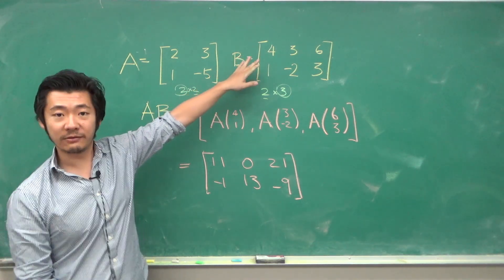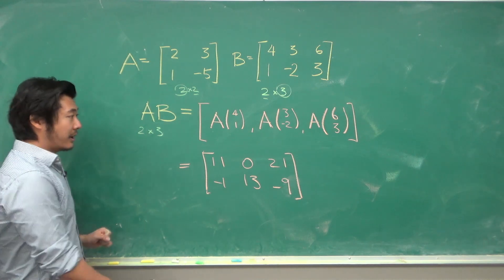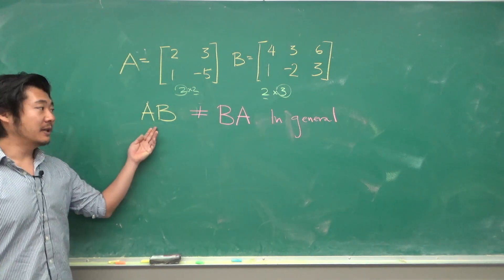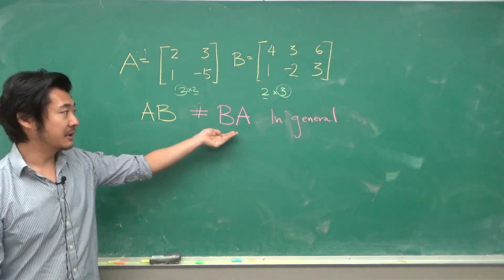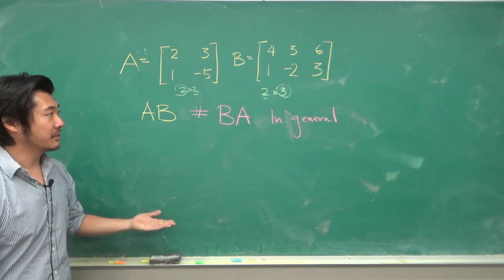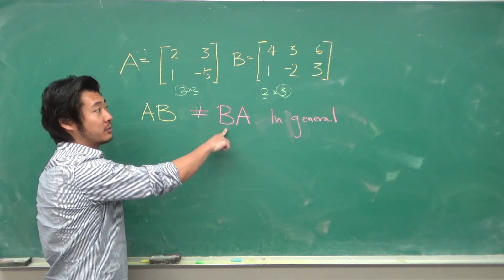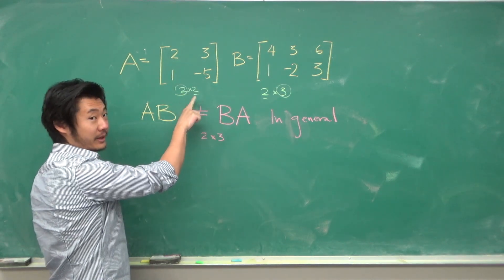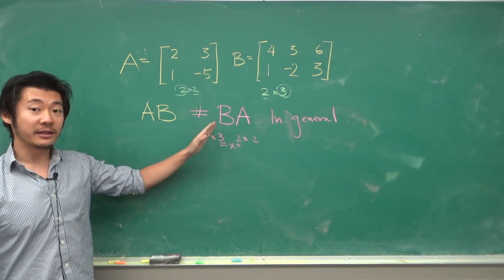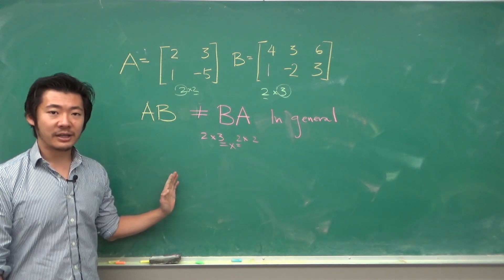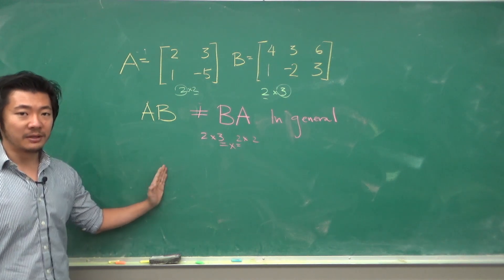One thing to note about matrix multiplication: A times B is not necessarily equal to B times A. In fact, B times A won't even be defined sometimes. In this case, B is a 2 by 3 and A is a 2 by 2, and these two numbers are not matching up, so this is undefined. Even if the dimensions match up, it still does not mean that A times B could be B times A.